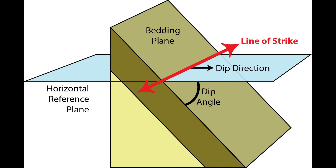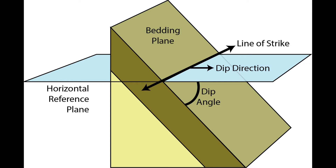The full description of strike is the directional bearing in either azimuth or quadrant format. Dip angle is the vertical angle between the plane being measured and the horizontal reference plane. A horizontal plane has zero degrees dip, and a vertical plane has a 90 degree dip. Strike and dip angle alone result in two possible planar orientations that both have the same strike and dip angle. You should always take note of dip direction to clarify which plane you are describing. Dip direction is the direction in which water would flow down your measurement plane, and it is always perpendicular to strike. A simple cardinal direction for dip direction is usually sufficient.